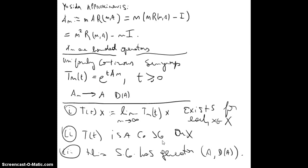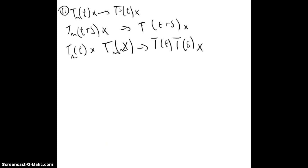The second thing is that T(t) is a C0 semigroup on X. For the second one we are going to use that we have pointwise convergence of T_n(t)x. So this would imply that T(t) satisfies the functional equation. We have T_n(t+s)x converges to T(t+s)x and each one separately we know will converge to T(t)T(s)x.